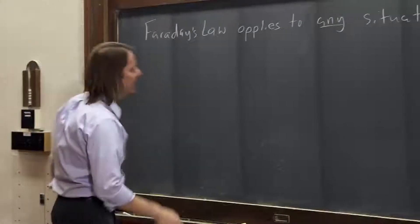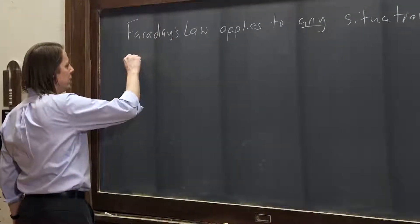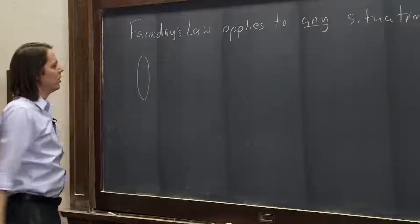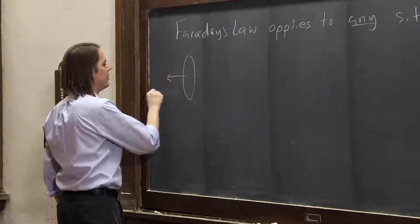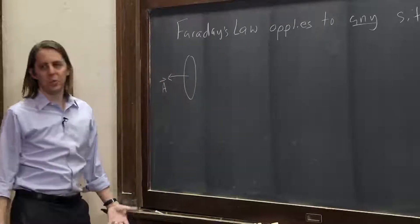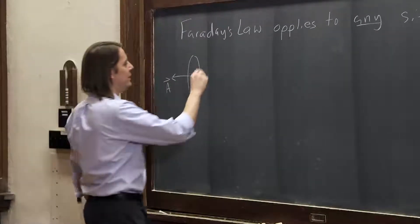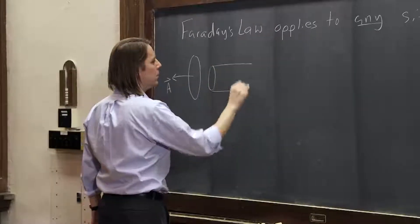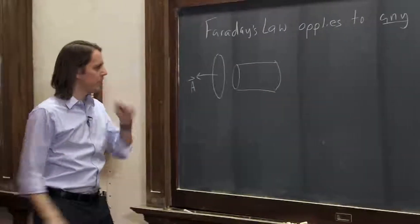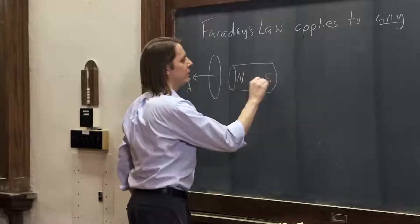First, I'll just draw a current loop here, or a loop of wire. It has to have an area vector - we have to decide which way is positive, basically. And then behind it, I'll draw a bar magnet like this, where this is the North Pole and this is the South Pole.